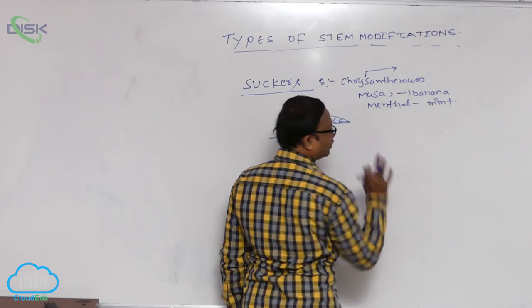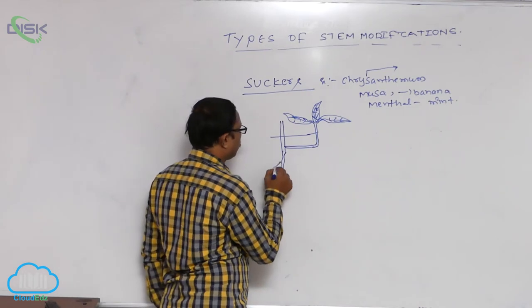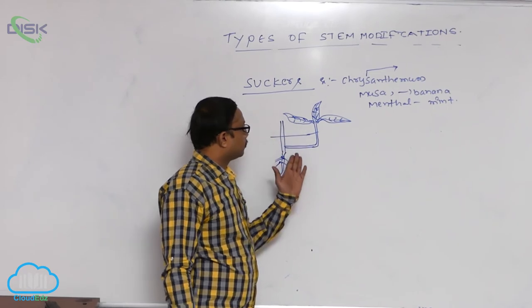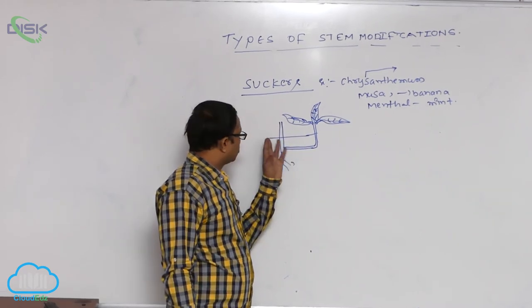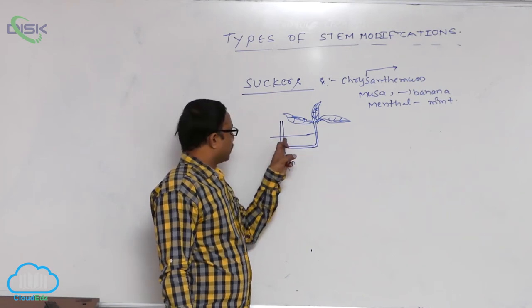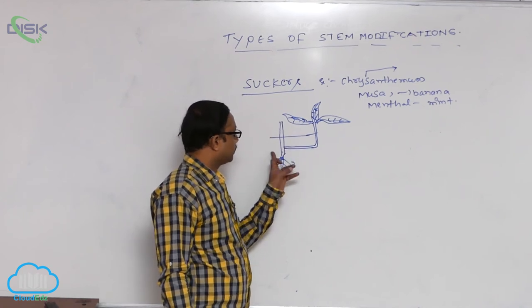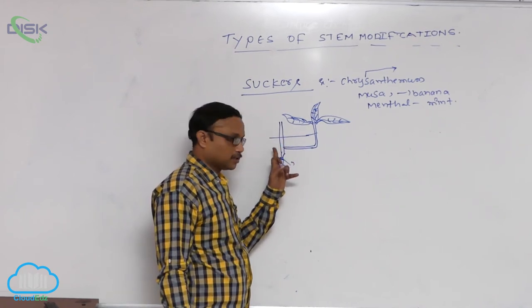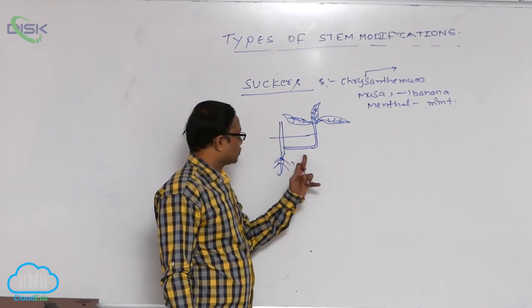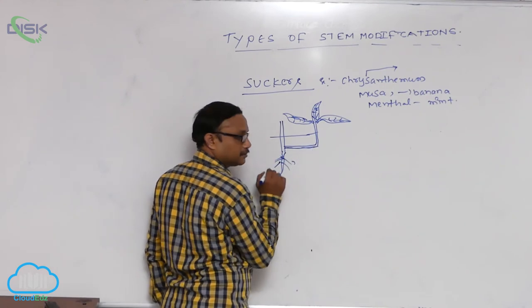So Chrysanthemum, Musa and Menta belongs to the SAKKAS. So what is the meaning of that SAKKAS? It means this type of subaerial stem modification. Some part of the stem is also present inside the soil. At the lower part of the stem producing branches inside the soil, it means already some part of the stem present below the soil. So this stem producing branches, these branches grow horizontally below the soil.